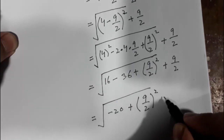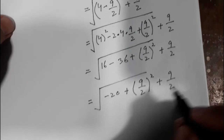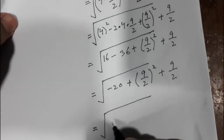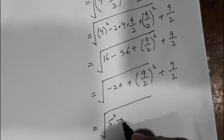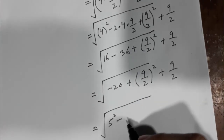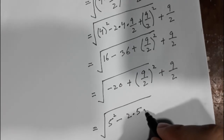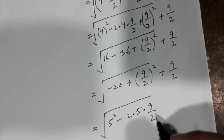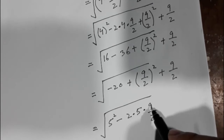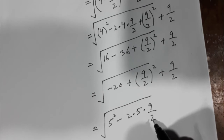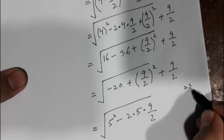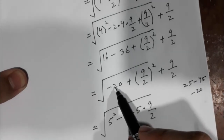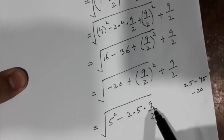Under the square root, plus 9 divided by 2 out of the square root. So instead of minus 20, I can write here 5 squared, which is 25, minus 2 into 5 into 9 divided by 2, which is 10 into 9 divided by 2, equal to 45. So 25 minus 45 would be again minus 20. So instead of minus 20, I write 5 squared minus 2 into 5 into 9 divided by 2.